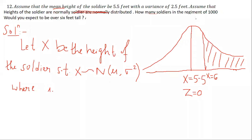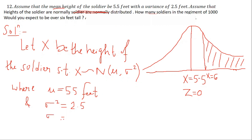The mean mu equals 5.5. The standard deviation squared is 2.5, so the standard deviation is the square root of 2.5, which equals approximately 1.58.